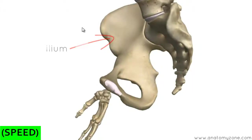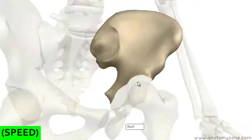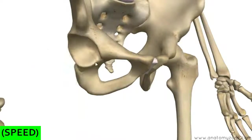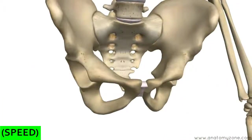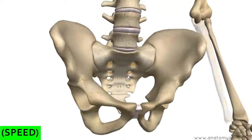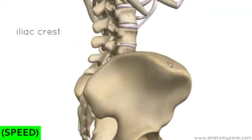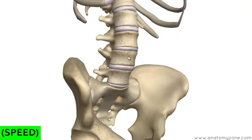I'll talk you through some features of the ilium, ischium, and pubis. Starting superiorly, we've got the iliac crest — the flattened crest at the top of the ilium where muscles attach. That's the iliac crest, and it lies at the level of L4, the L4 lumbar vertebra. This is also the area where the aorta bifurcates.